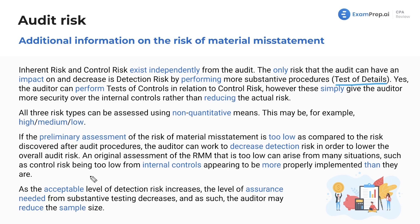You can adjust these numbers as you discover more items throughout the audit. You're not locked into your pre-assessments — adjusting them as you do more work just makes sense. Lastly, as the acceptable level of detection risk increases, the level of assurance needed from substantive testing decreases, and as such the auditor may reduce the sample size. A higher acceptable detection risk means lower required testing — less work, which saves time and resources.